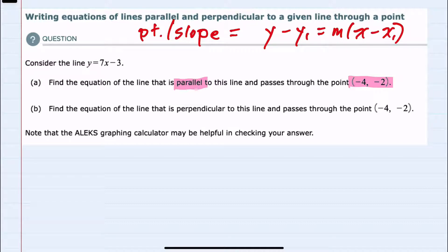Since the line that we're given as a starting point, y equals 7x minus 3, is in slope-intercept form, I can tell that the slope is 7.